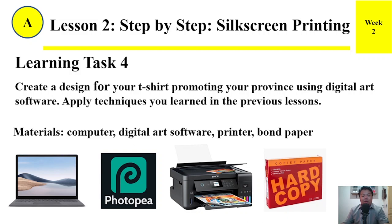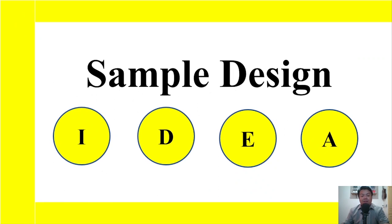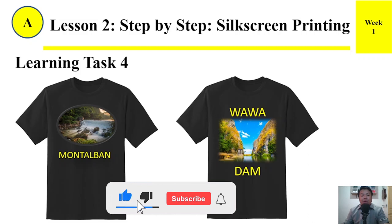Learning Task Number 4. Create a design for your t-shirt promoting your province using digital art software. Apply techniques you learned in the previous lesson. Materials: computer, digital art software, printer, and bond paper. Steps: Number 1 — Think about the distinct features of your province or an important event celebrated by your hometown. Number 2 — You can also include yourself in your design by proudly saying that your Philippine destination of choice is one of the best in the world. Number 3 — Make use of different colors. Number 4 — Print your design. Sample designs include Montalban and Wawa Tap.